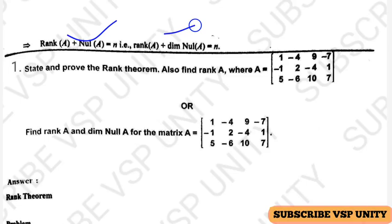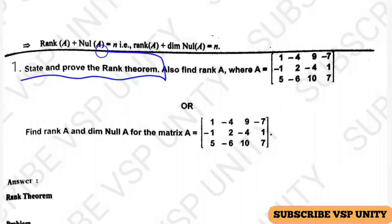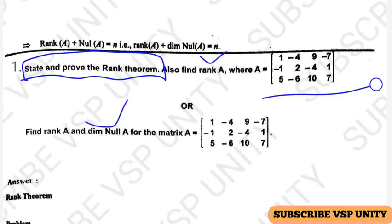If you see the end of this video, next I will start the third unit or fourth unit. So, the question is: what does the rank theorem state? I already explained this in the previous video — once check that video. Now I will explain only how to find rank A and how to find the dimension of nullity of A for a given matrix, by using the rank nullity theorem.